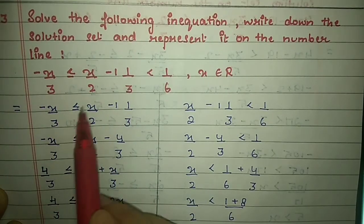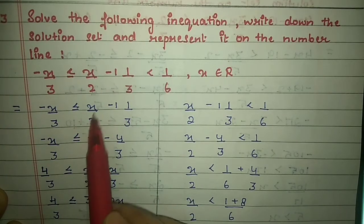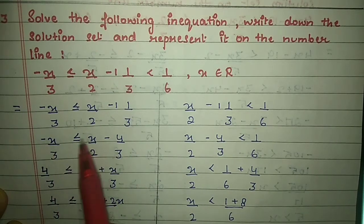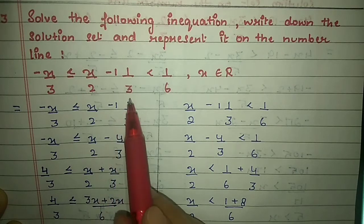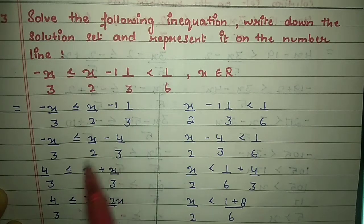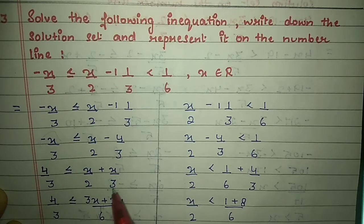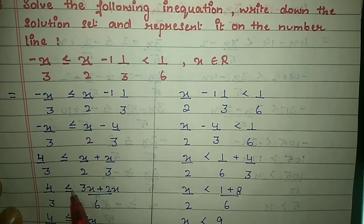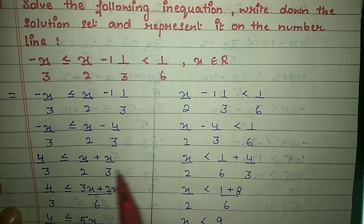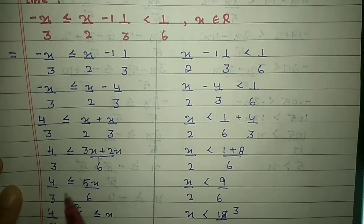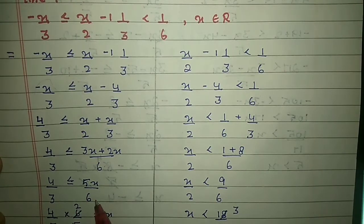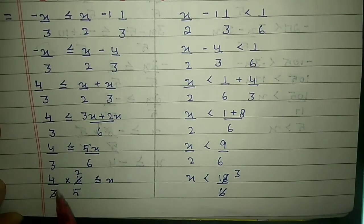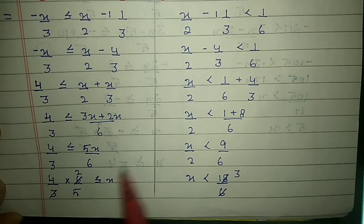Take the first half: minus x/3 ≤ x/2 minus 1 and 1/3. Convert 1 and 1/3 to improper fraction: 4/3. Shift x/3 to the right and 4/3 to the left. Take LCM: 4/3 ≤ (3x + 2x)/6 = 5x/6.